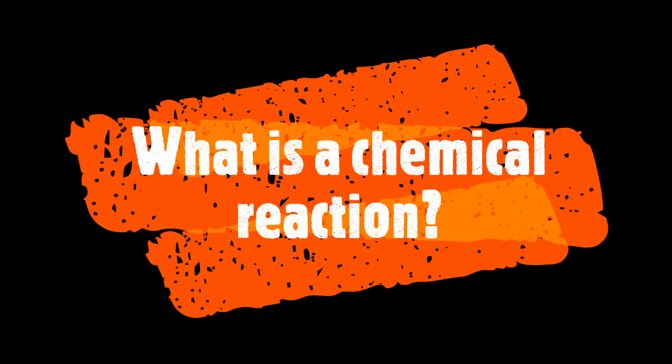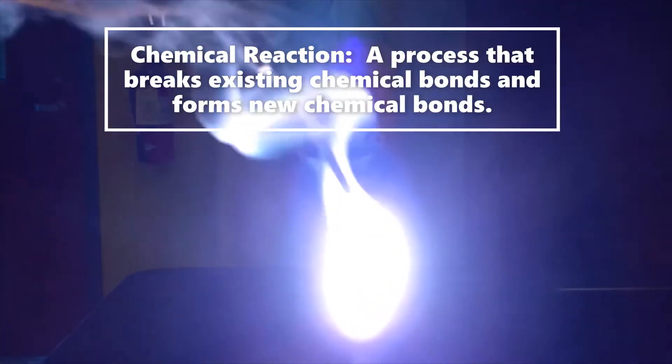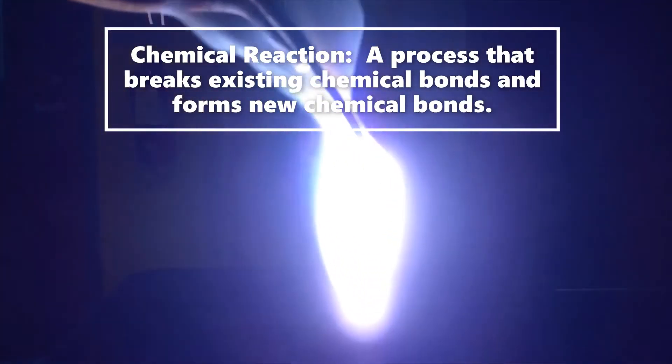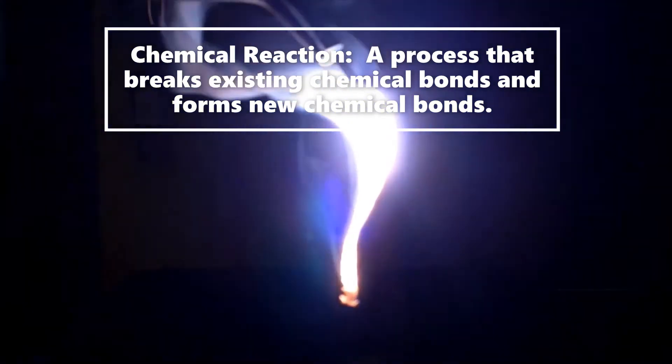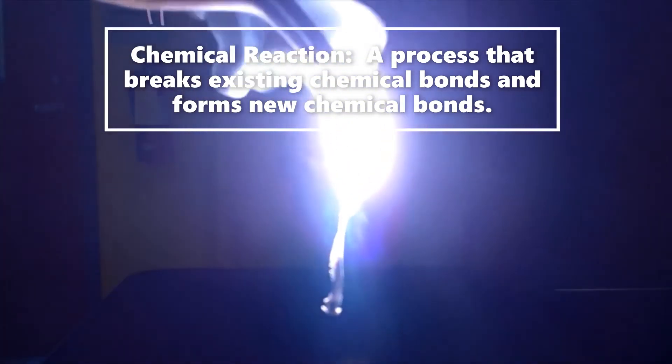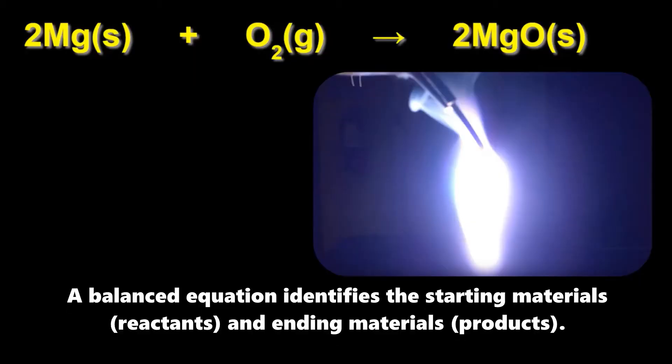You might be asking yourself, what is a chemical reaction? Let's take another look at that reaction between magnesium and oxygen to help answer that question. A chemical reaction is a process that breaks existing chemical bonds and forms new chemical bonds. The reaction breaks existing bonds in magnesium and oxygen and forms new bonds between magnesium and oxygen.